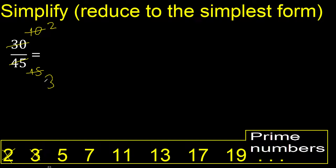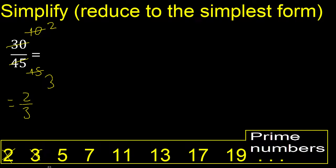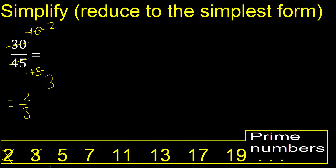Divided by 5 — finish, because 2 and 3 cannot be divided by the same number. Finish.